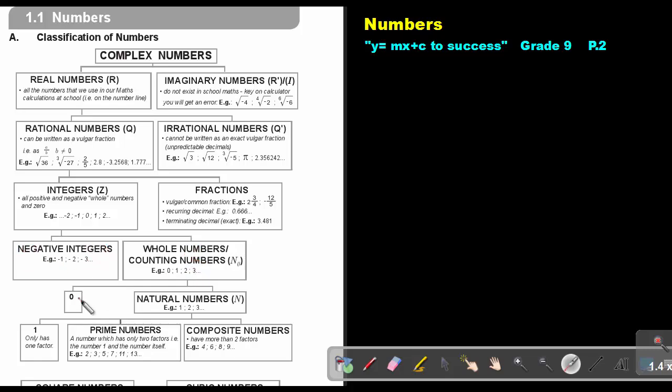Whole numbers divide into two groups: the 0 and then natural numbers. That starts with 1. So 1, 2, 3, 4, 5, 6, and you can go on.